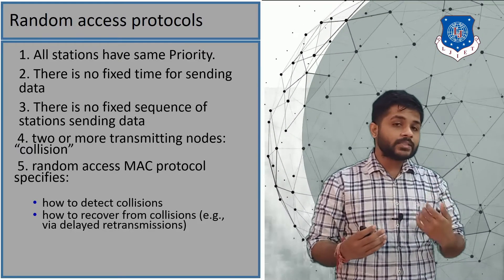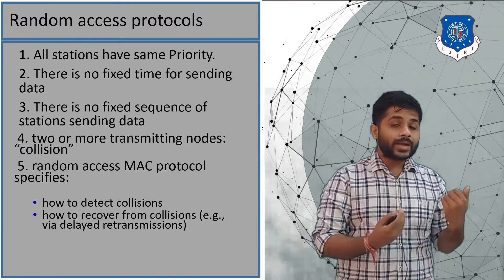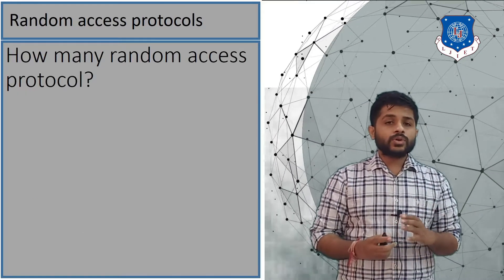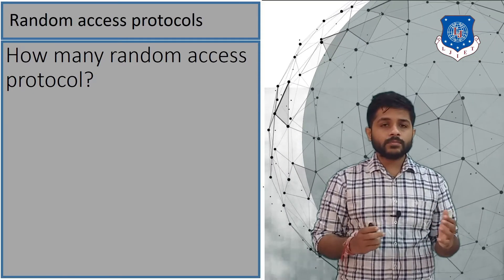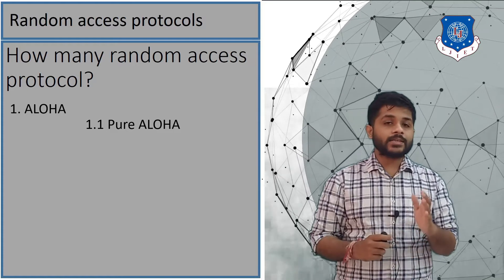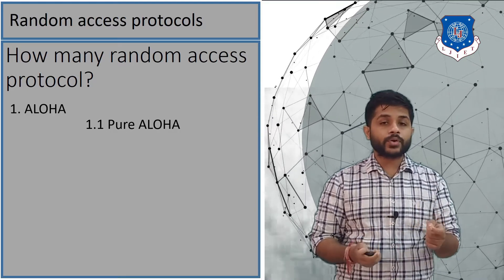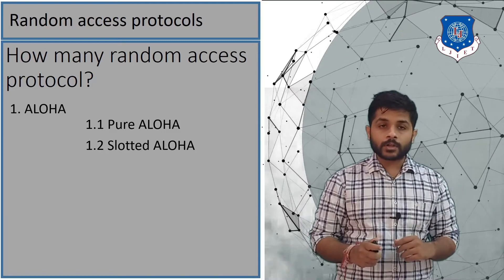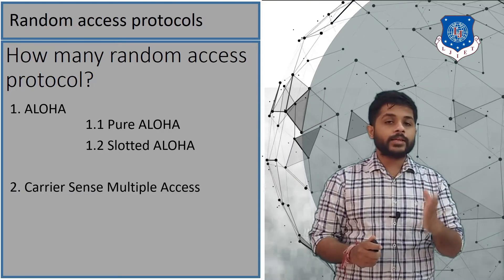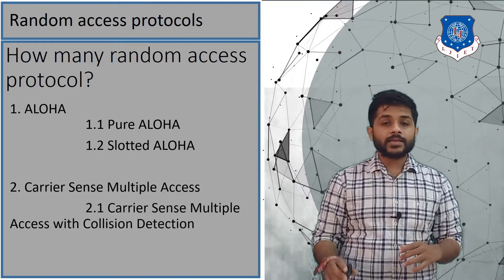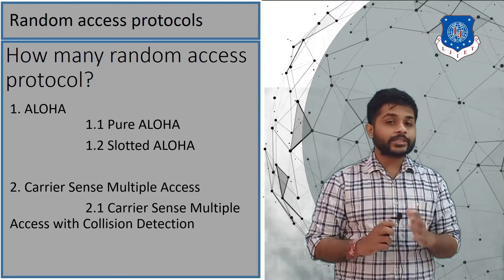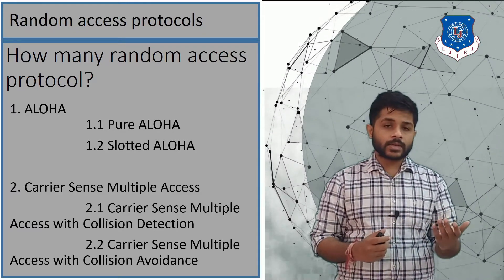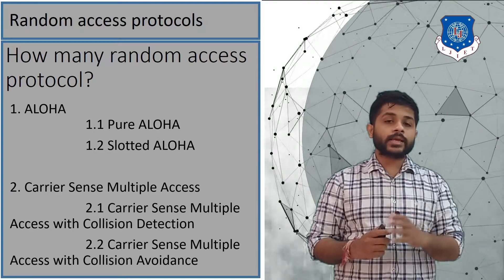We will see how a station knows if its packet is part of a collision and what it has to do when there is a collision. There are many types of random access protocol. The first type is Aloha, divided into pure Aloha and slotted Aloha. The second type is Carrier Sense Multiple Access (CSMA), divided into CSMA with Collision Detection (CSMA/CD) and CSMA with Collision Avoidance (CSMA/CA).